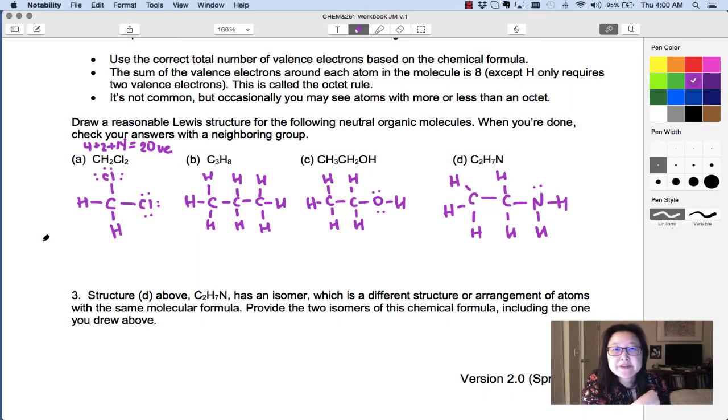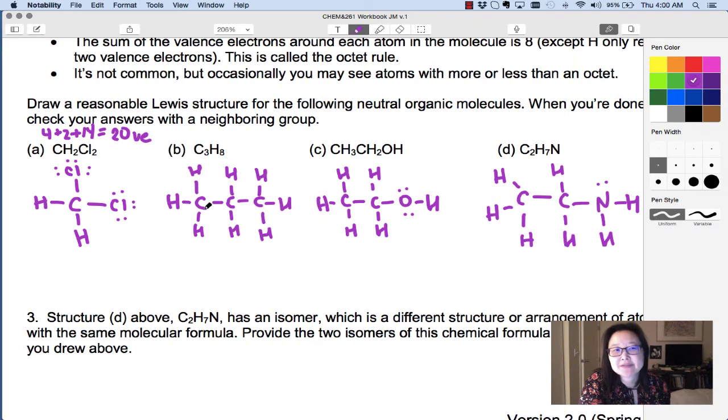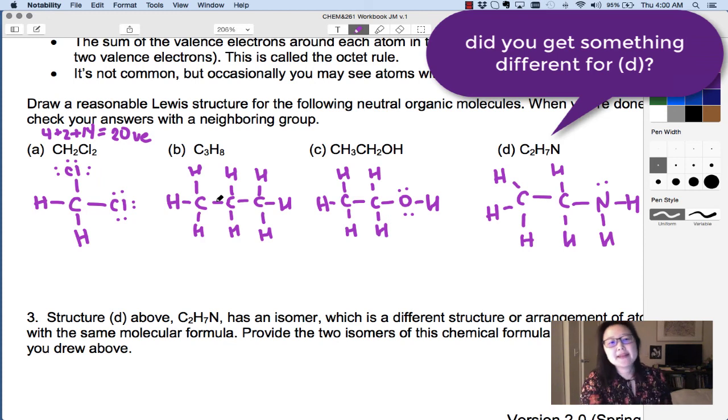Here are the answers that I got. Just remember who is likely to be in the center, who goes on the outside, and then check for the octet rule. Did you satisfy the octet rule? Every central atom has access to 2, 4, 6, 8 electrons around it. So that's the valence shell being complete.